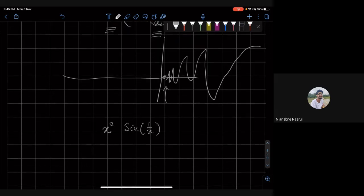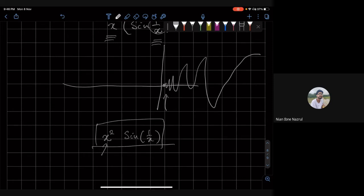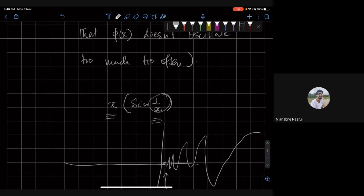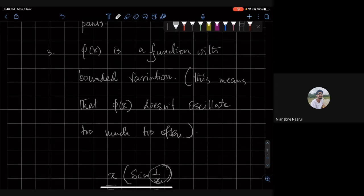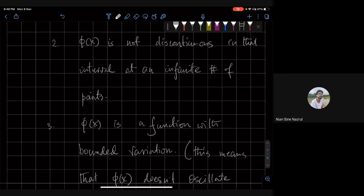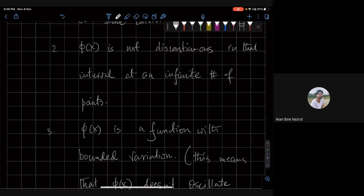then this guy is able to repress this oscillations much better and this turns out to be a function which is with bounded variation. Okay, so this is an example of what it means to have bounded variation. So these are the technical Dirichlet conditions.